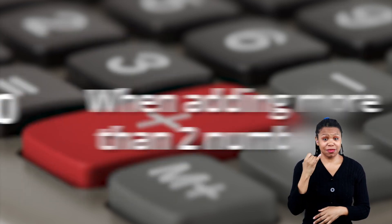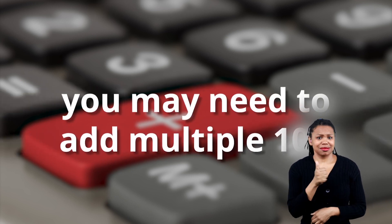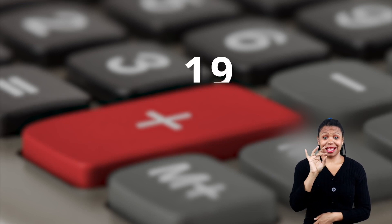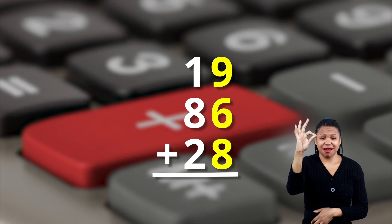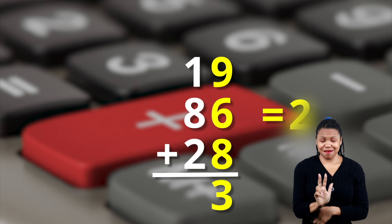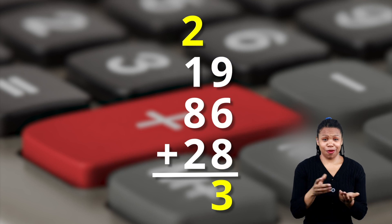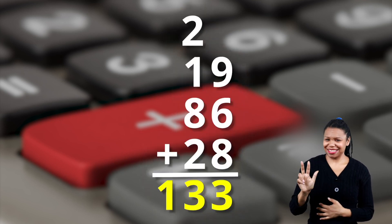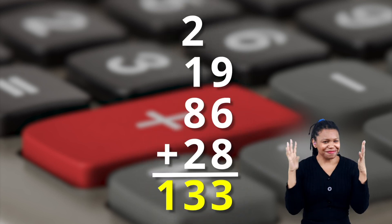And one more thing. If you're regrouping and you need to add more than two numbers, you might end up adding two tens, not just one. So in this example, nineteen plus eighty-six plus twenty-eight. See how when you add nine and six and eight, you get twenty-three. That means you put the three below the ones column and the two to the tens column. So the sum of nineteen plus eighty-six plus twenty-eight is a hundred and thirty-three. You see? You get it? Super simple, isn't it? Well done.